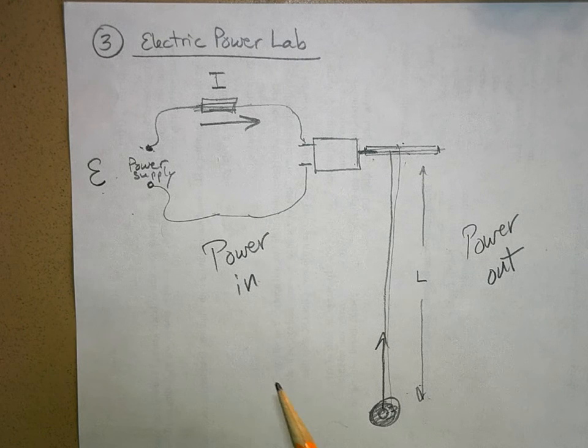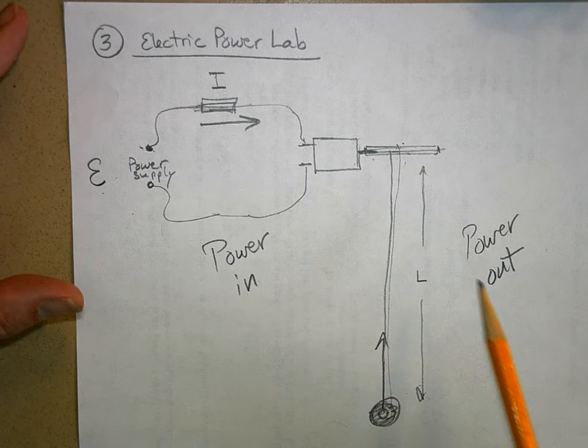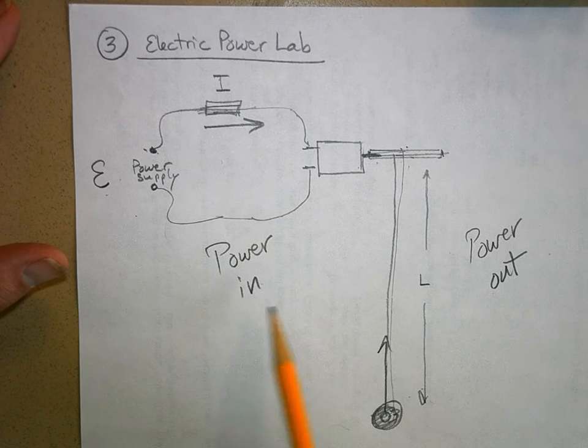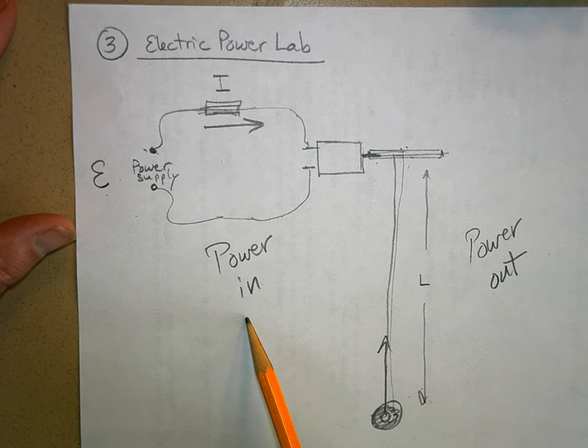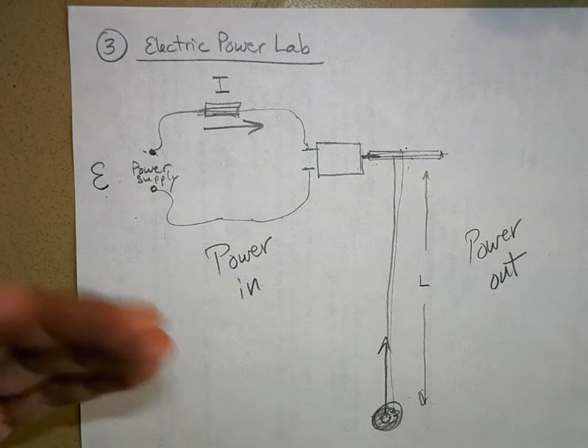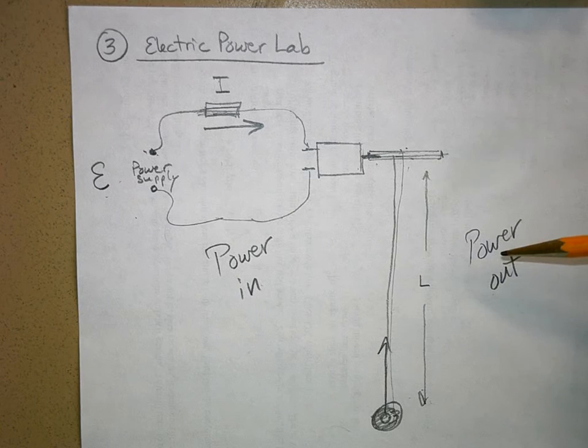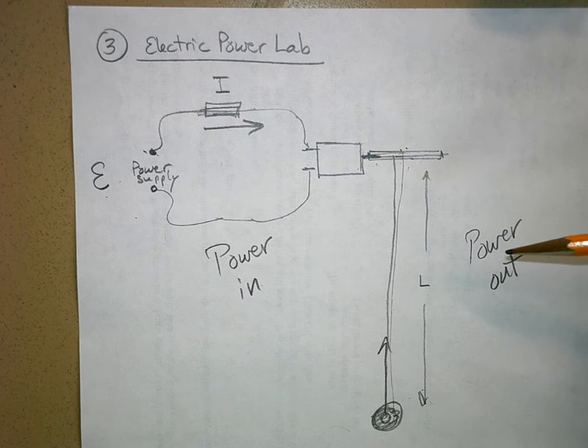Then what we're going to do is we're going to come up with a ratio of how much power did we get out of the motor versus how much power we put into it. From that we're going to calculate efficiency, how efficient is this motor or how efficient was this whole process.